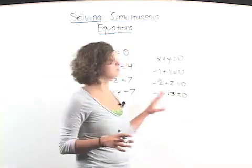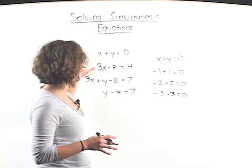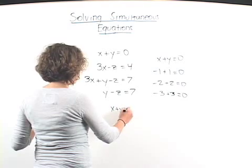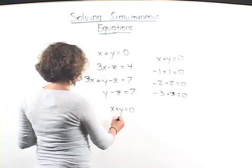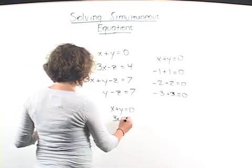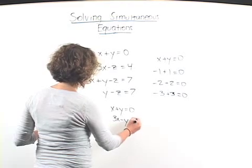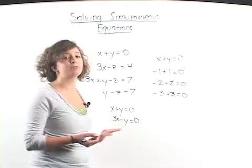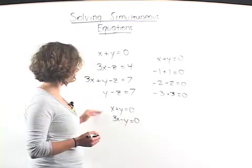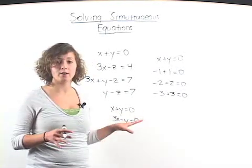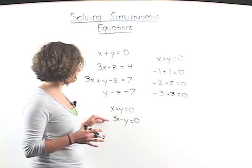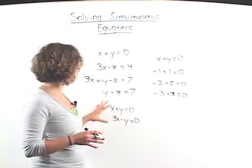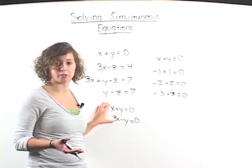So, when we have two equations, let's say we had x plus y equals 0, and 3x minus y equals 0, we're able to use both of those equations to find an answer for x and y. And we're going to do that using a couple of methods that I'm going to teach you to help us solve simultaneous equations.